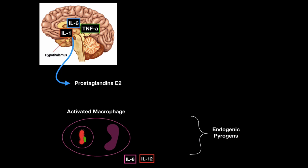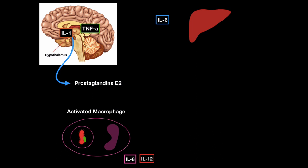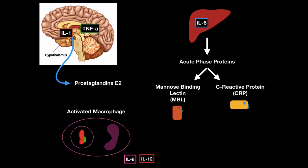Another systemic response involves the liver. Interleukin-6 can travel to the liver and trigger the release of acute phase proteins, like mannose-binding lectin and C-reactive protein — those two are part of the complement system.